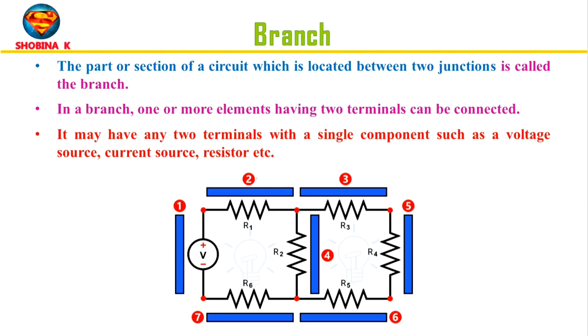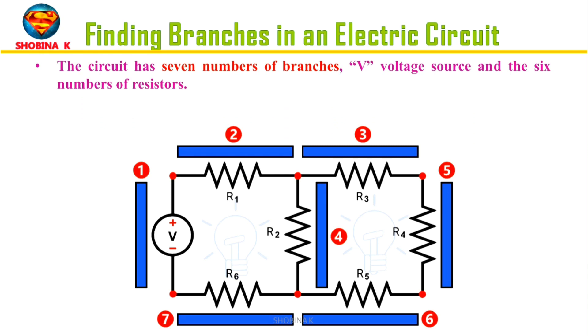Next, branch. It is a part or a section of a circuit which is located between two junctions is called the branch. In a branch, one or more elements having two terminals can be connected. In other words, it may have any two terminals with a single component such as voltage source, current source, or resistor.